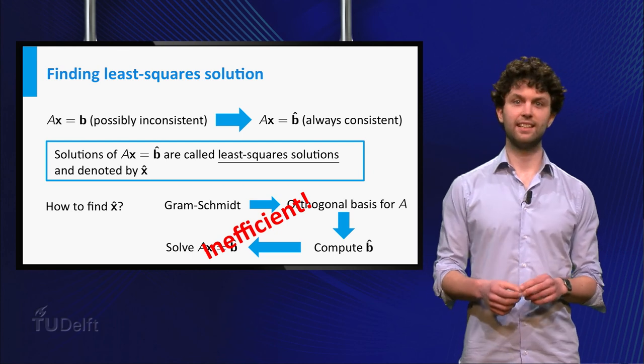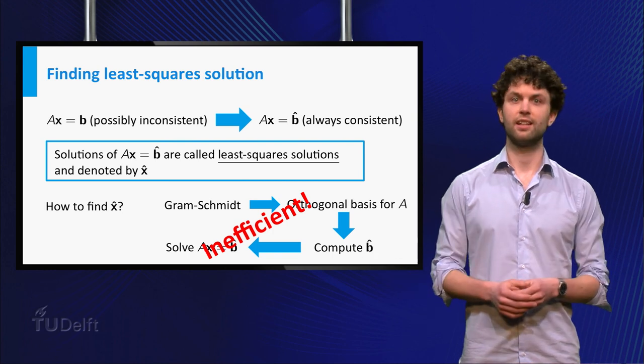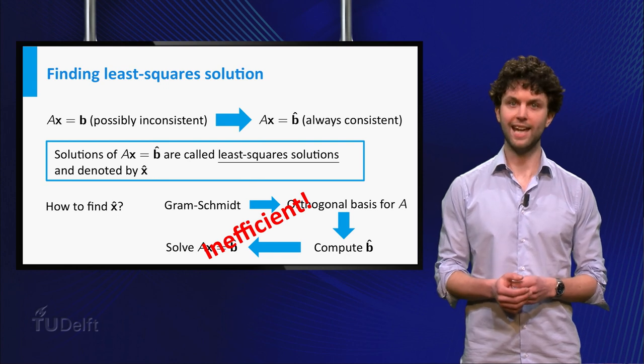However, in class you are going to learn an alternative way to compute the least-square solution x-hat. This alternative method works a lot quicker, because it bypasses the computation of b-hat.